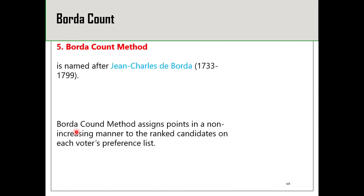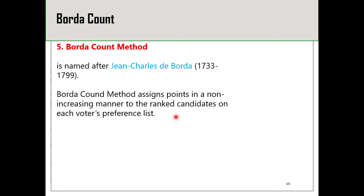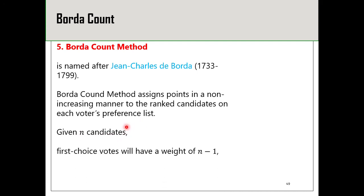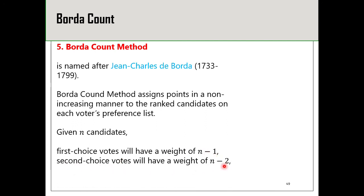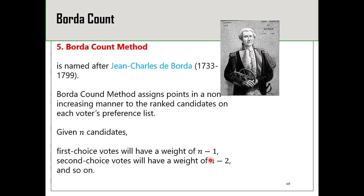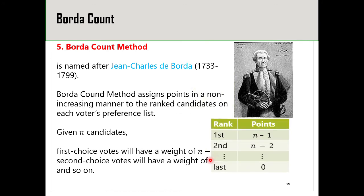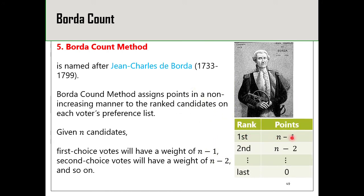Next is the Borda count method. The idea is we give points for the ranking of candidates by each voter in the preference list — a particular point for first place votes, another for second place votes, and so on. This method is named after John Charles de Borda. Suppose there are N candidates: first place votes have a weight of N-1, second place votes have a weight of N-2, and so on and so forth.